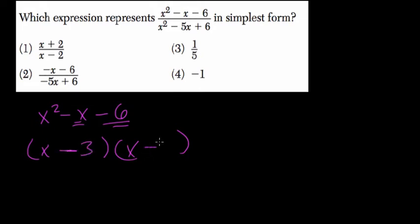Negative 3 and positive 2. So those two numbers multiplied are negative 6, added are negative 1. Those are the numbers we're looking for. That's a quick way of factoring it. That's our numerator.